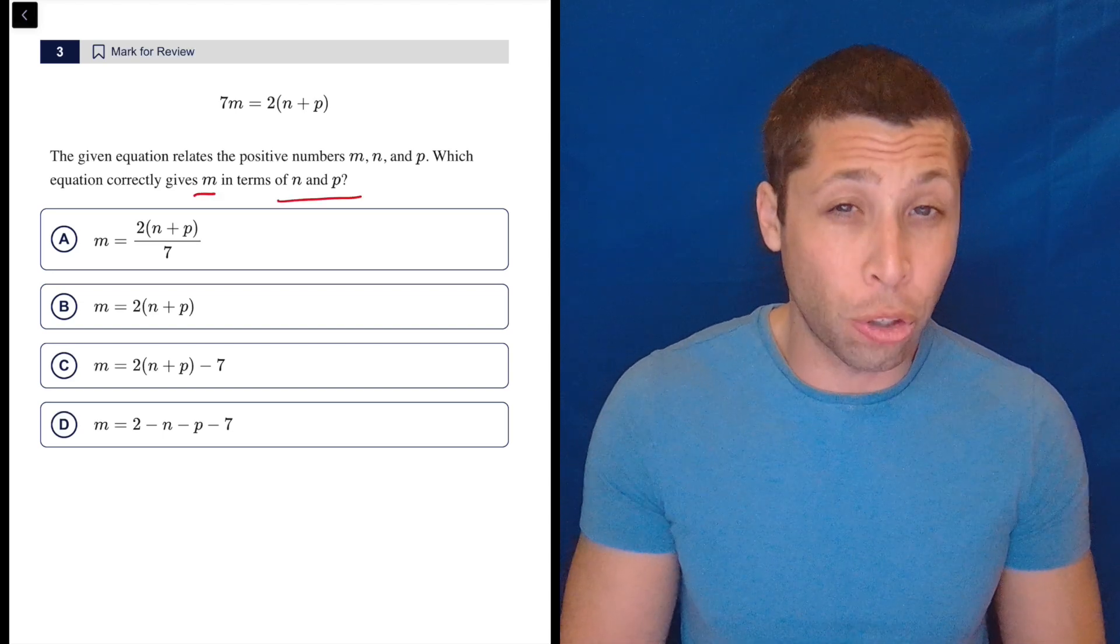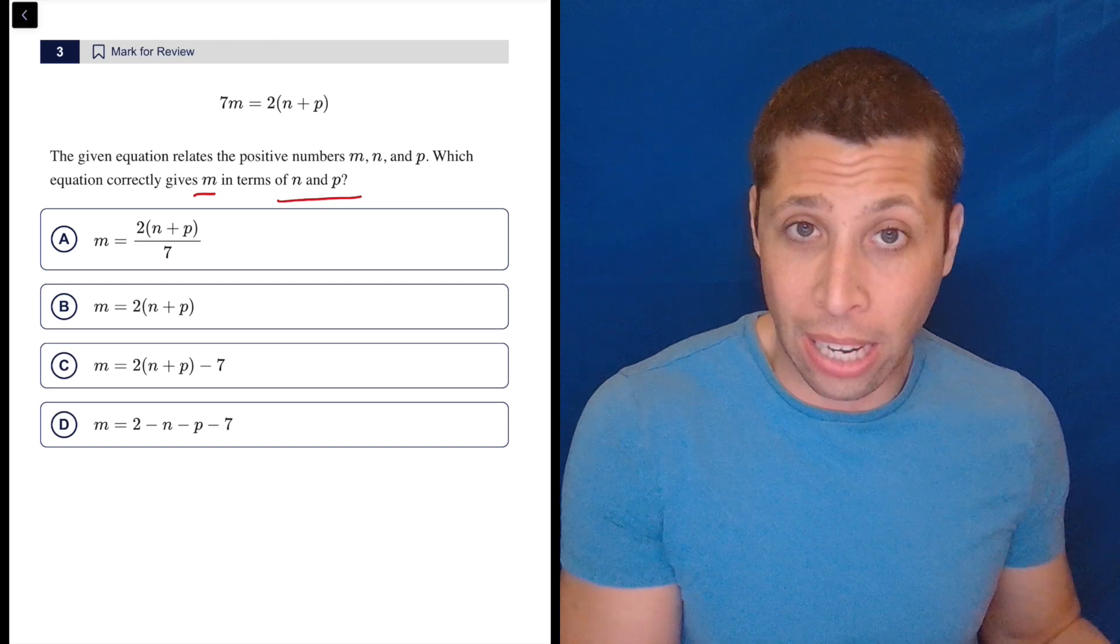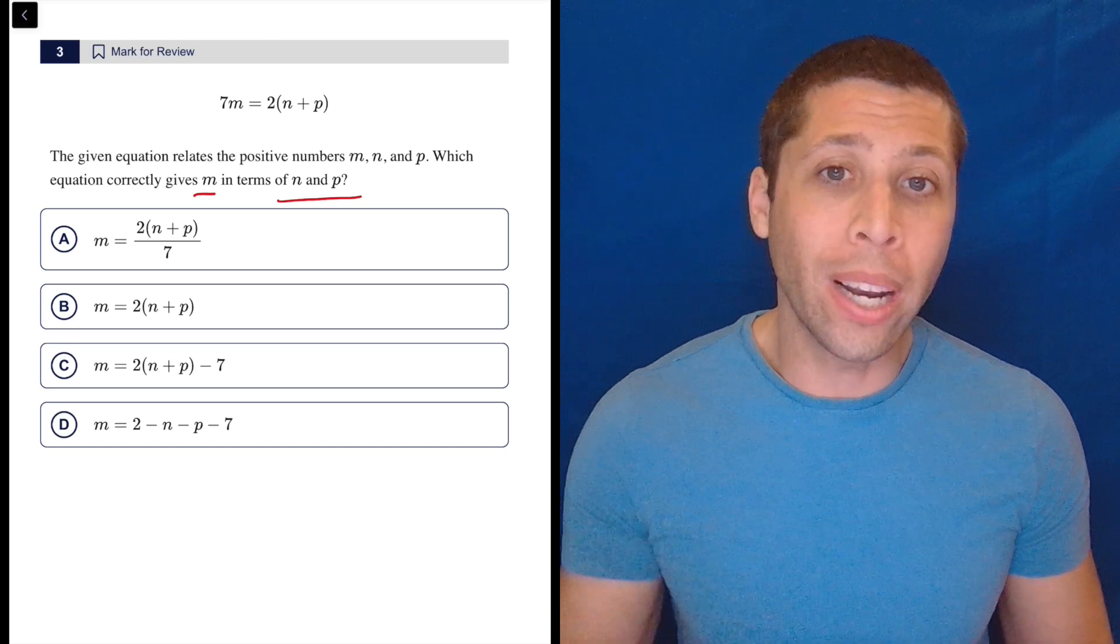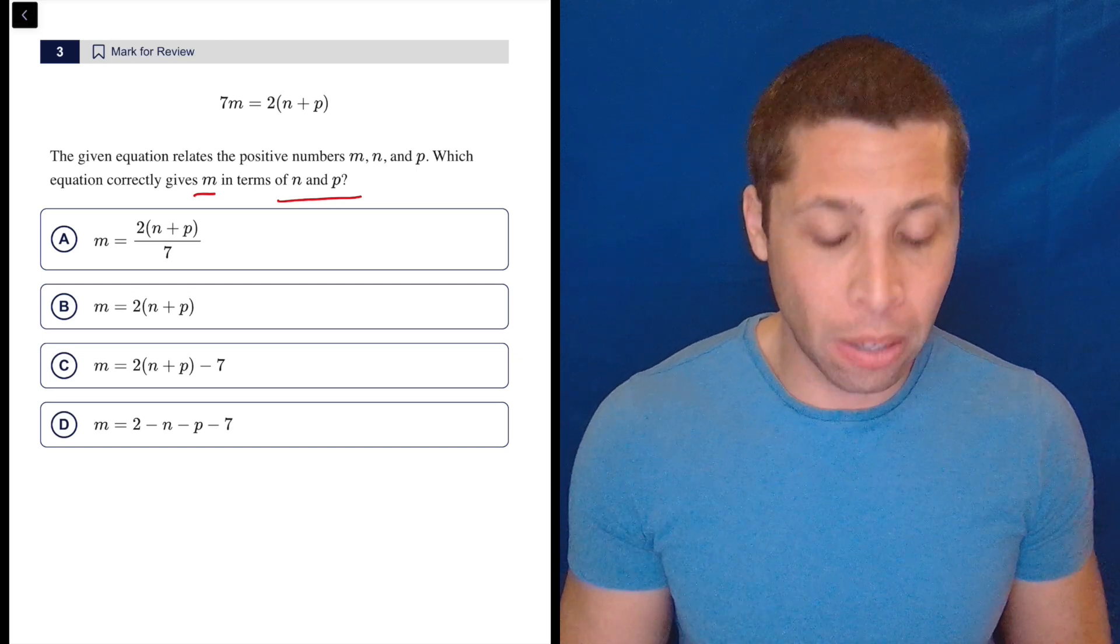If you're not sure what that means, just look at the choices. M equals is how all these things are set up. So they're basically asking you what algebra move would get M alone.